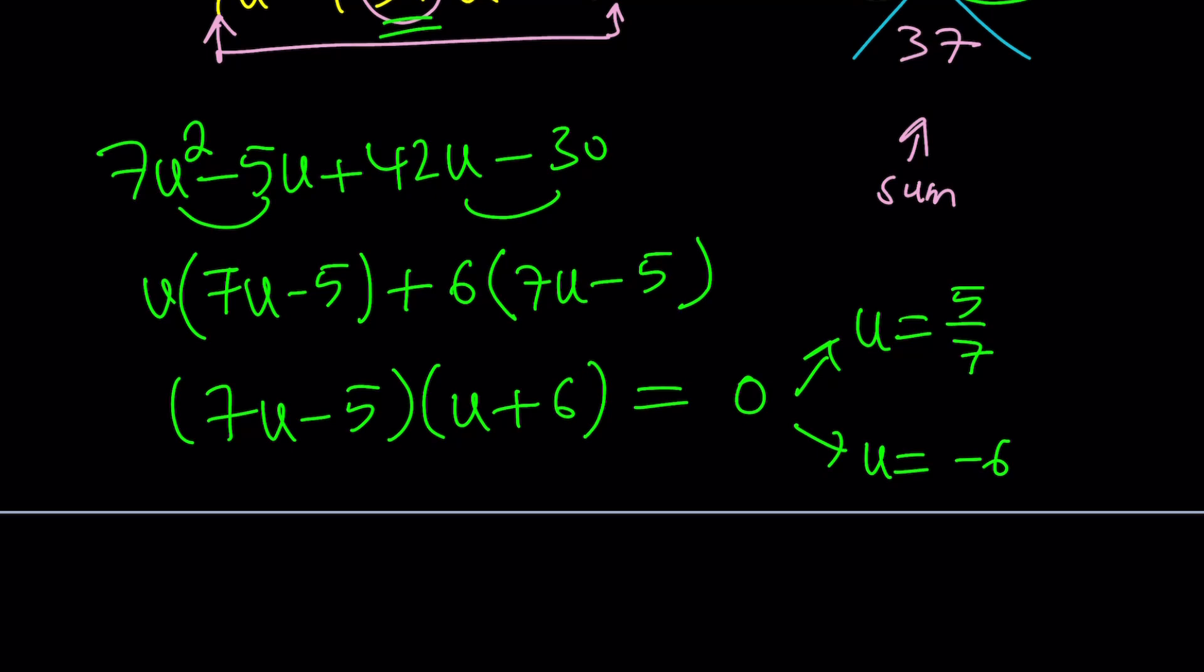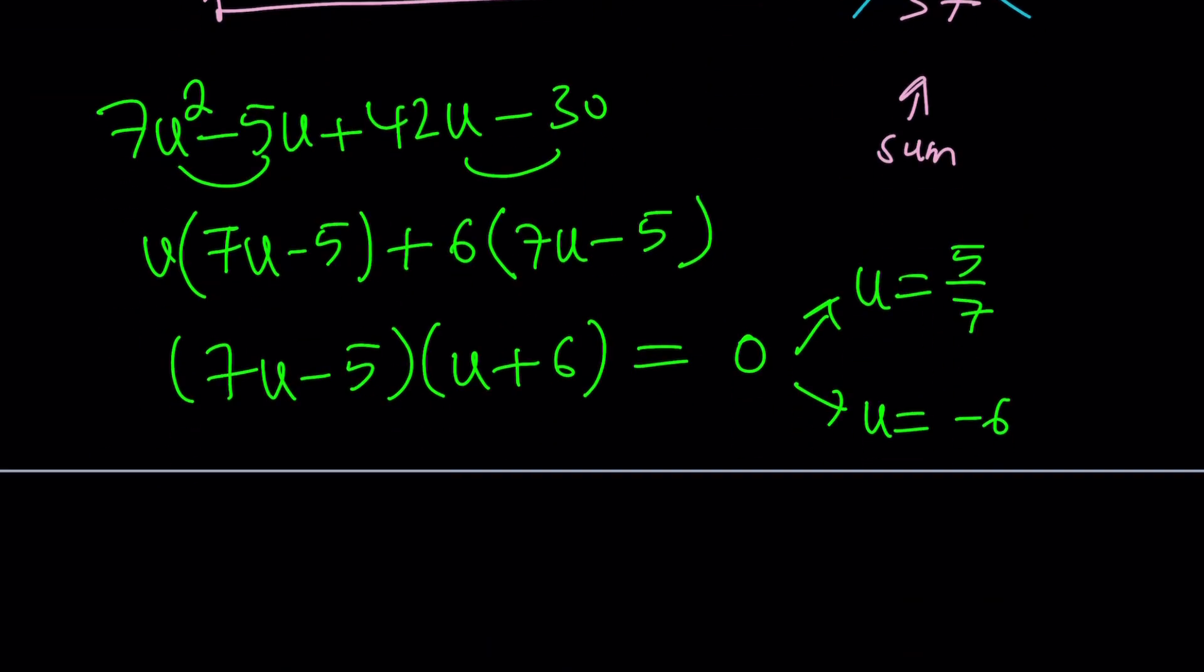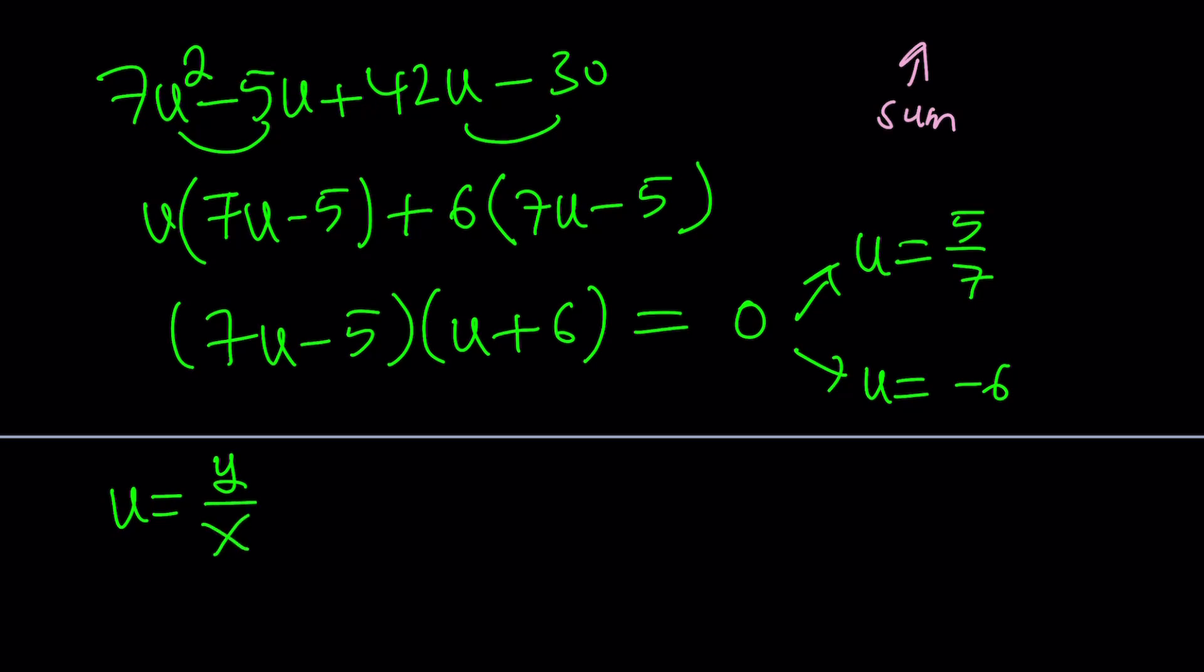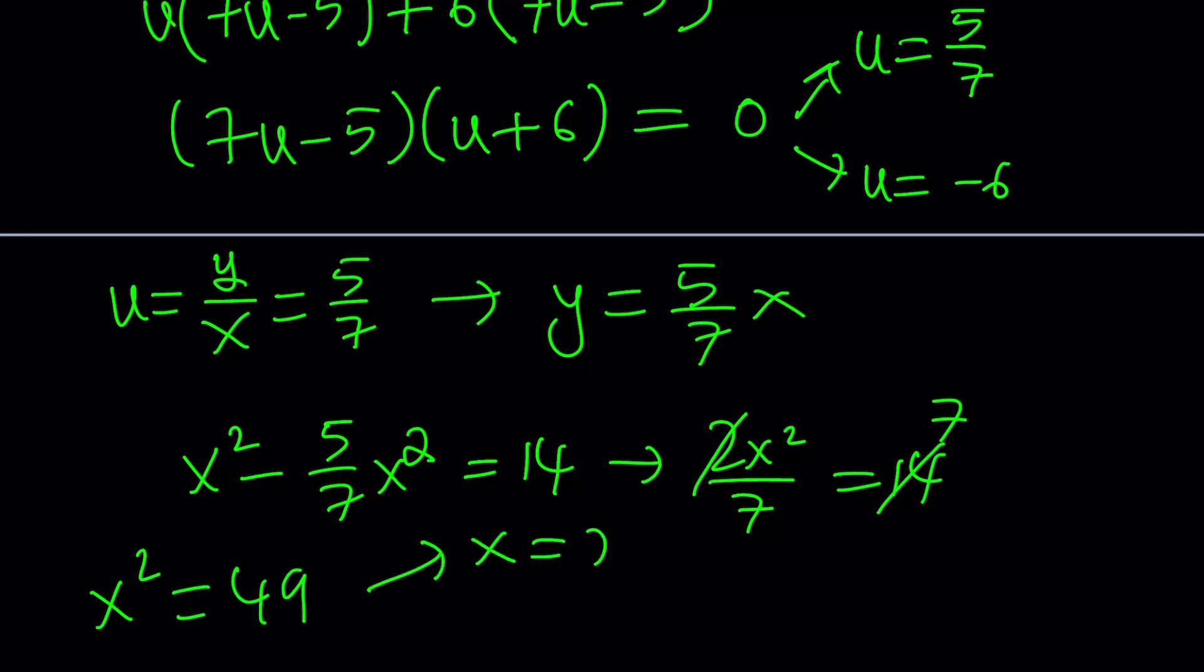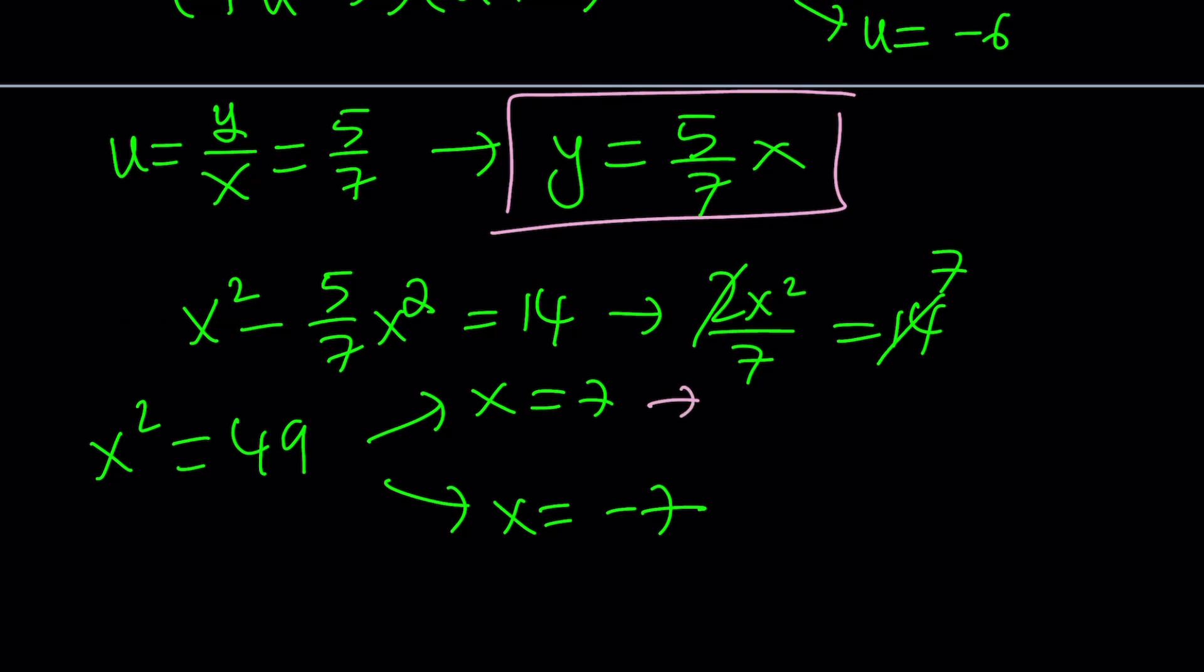But u is what? So if u is 5 over 7, then you can basically write y as 5 over 7x. And if you plug this into one of the equations, let's use the top one. x squared minus xy, x squared minus 5 over 7x squared equals 14. Then this is 2x squared over 7 equals 14. 2 goes into 14, 7 times. x squared equals 49. It's going to give you two solutions: x equals 7 and x equals negative 7. Since y is 5 sevenths of x, if x is 7, then y is going to be 5. And if x is negative 7, y is going to be negative 5. So those are going to give us two ordered pairs as solutions.